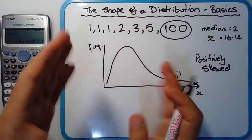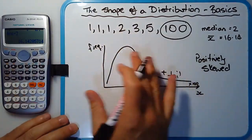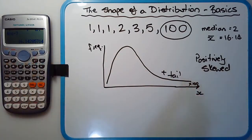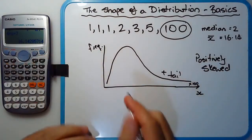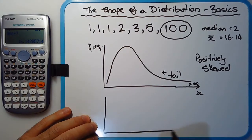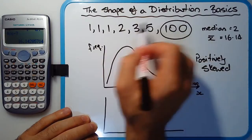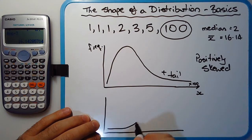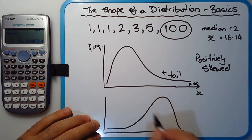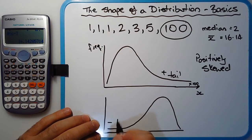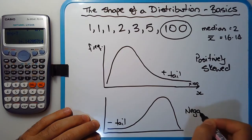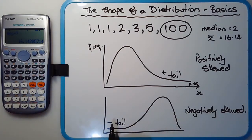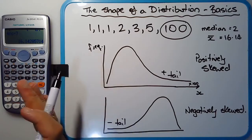Negatively skewed is really just the other way around. If we have a lot of large numbers and just one very, very small number, the tail instead of being on the right-hand side is on the left. You can see that the bulk of the data is on the right, but there's a negative tail. This is negatively skewed, and it's generally caused by some very small outlier on the left-hand side.